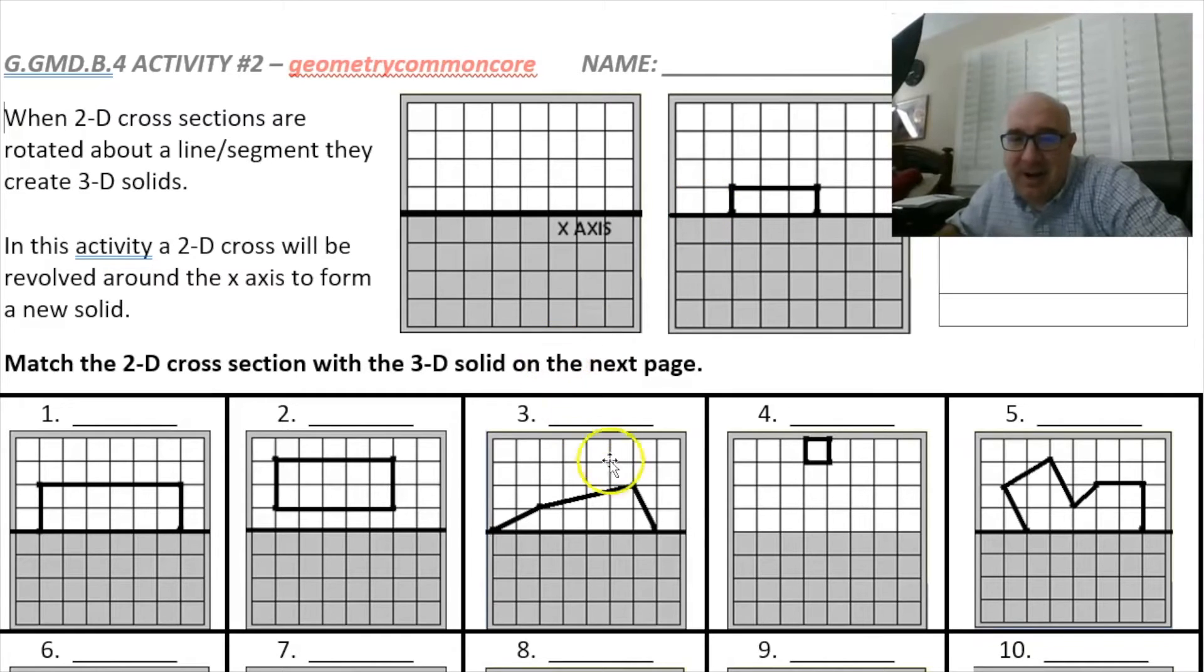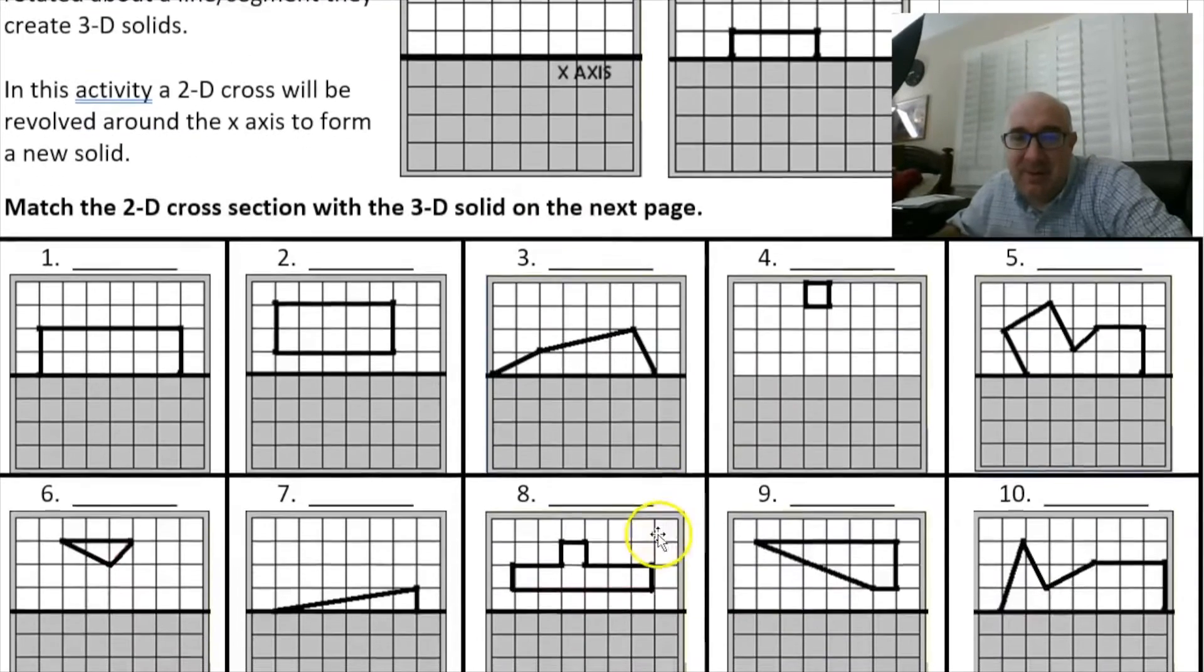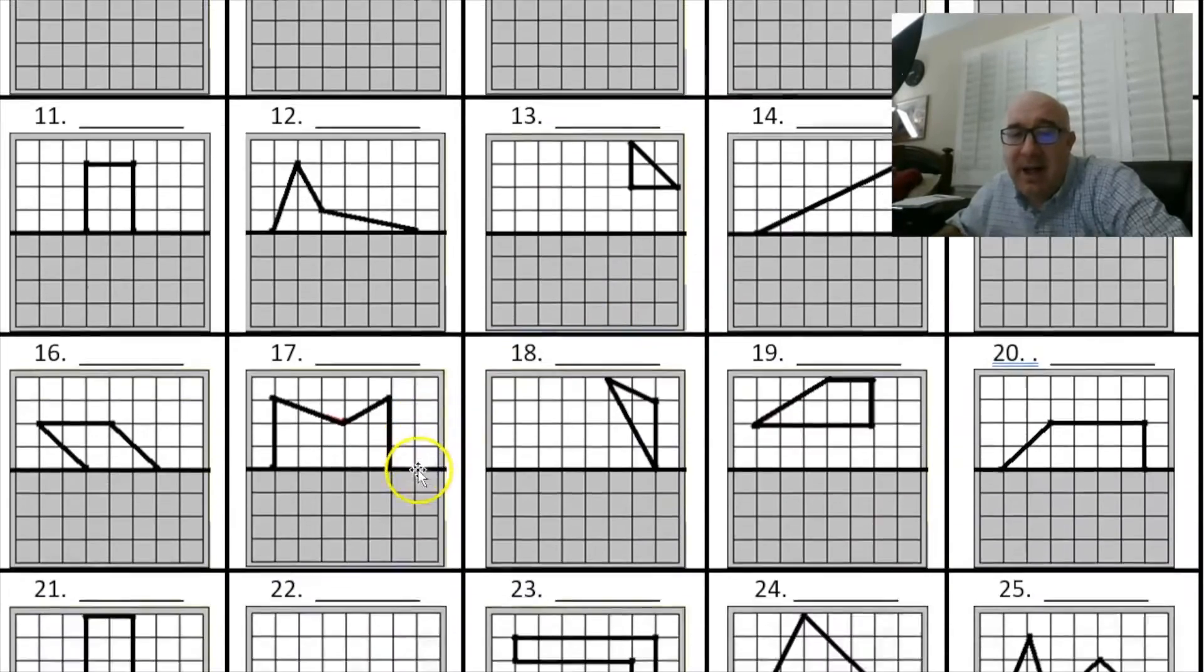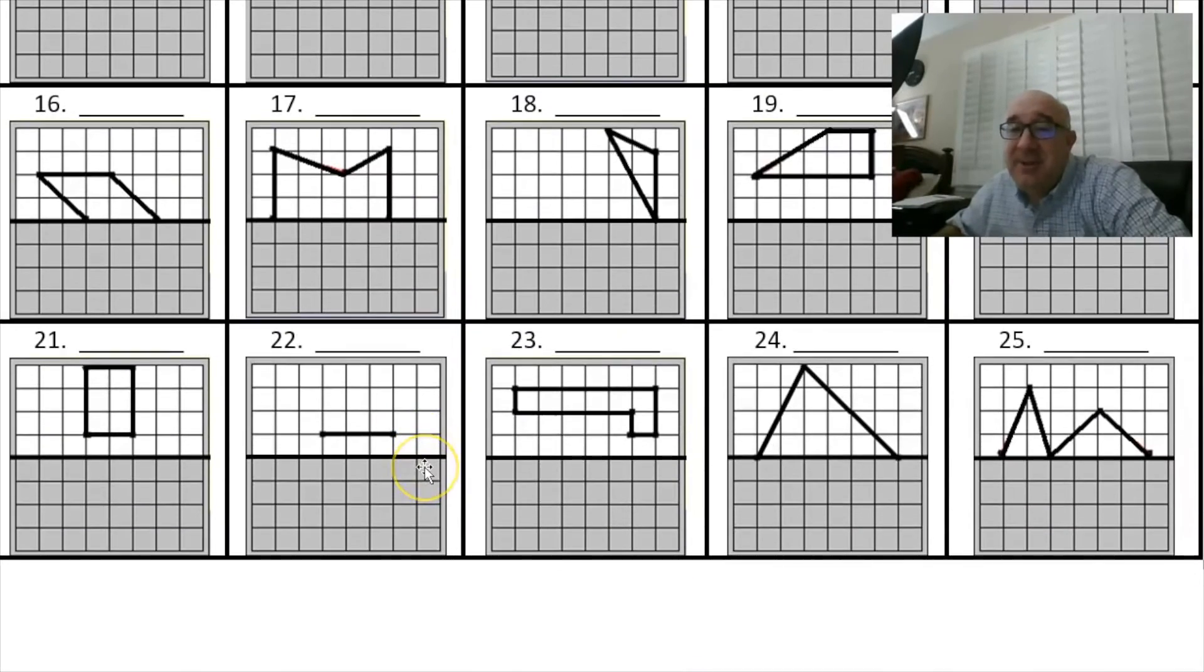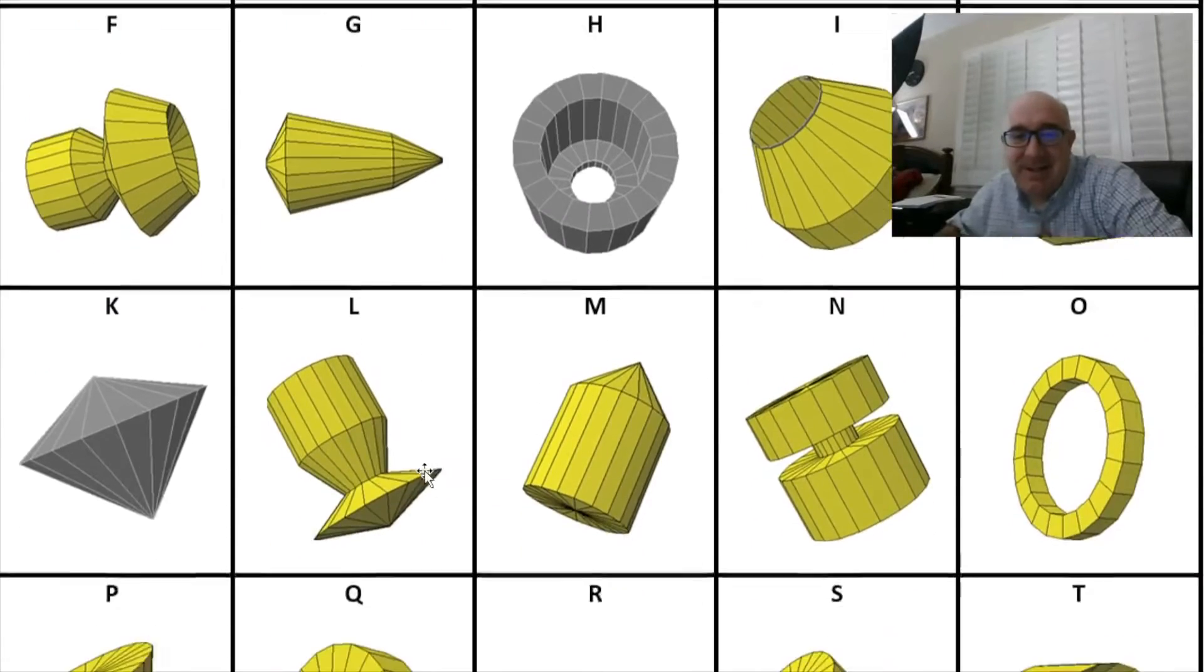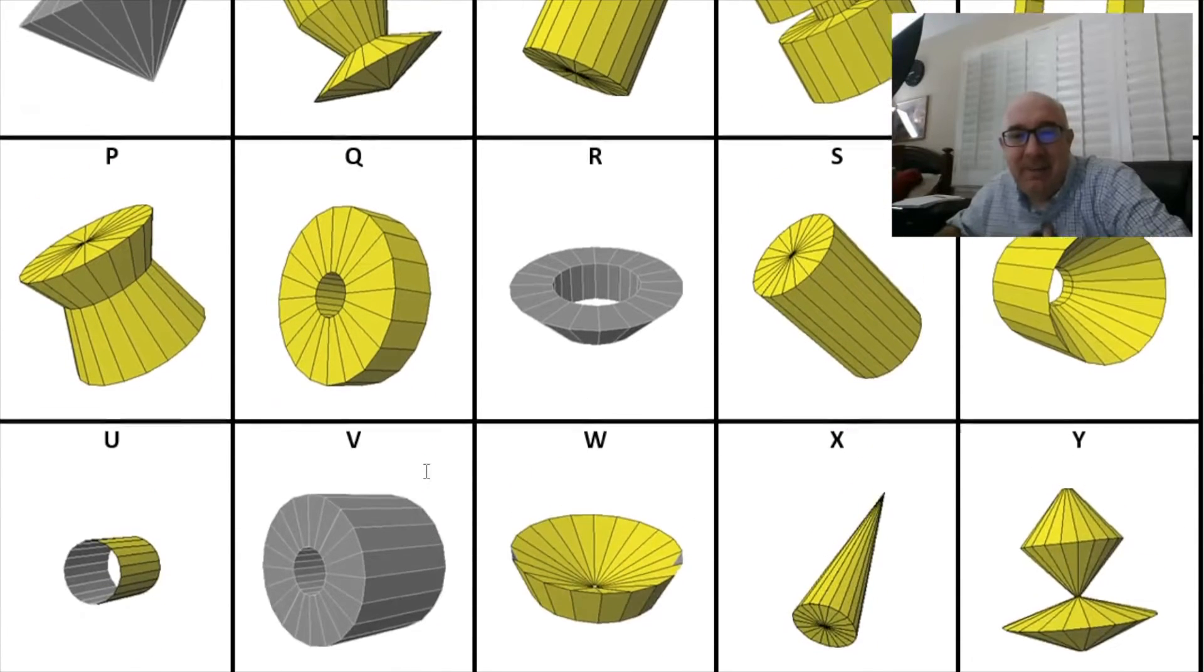And so what I do is I create a number of different types of shapes to revolve around the axis and then you've got to go over here and find the guy that matches it. So let's see if we could find a match.